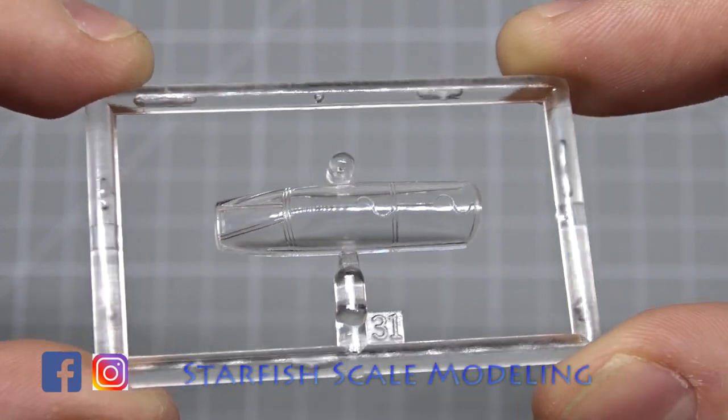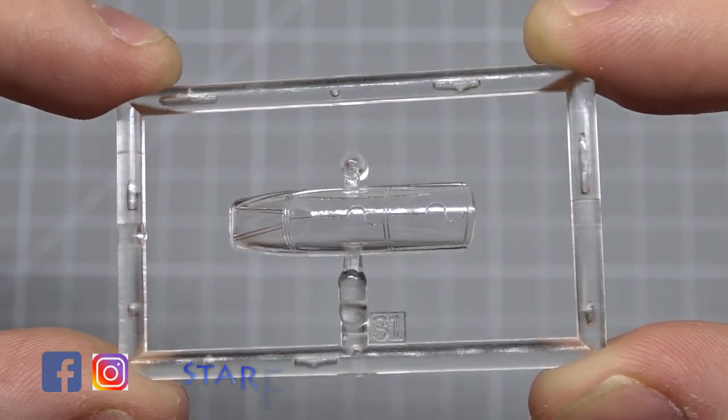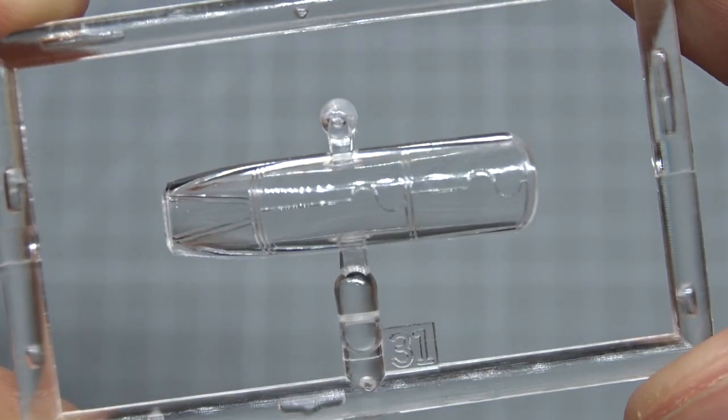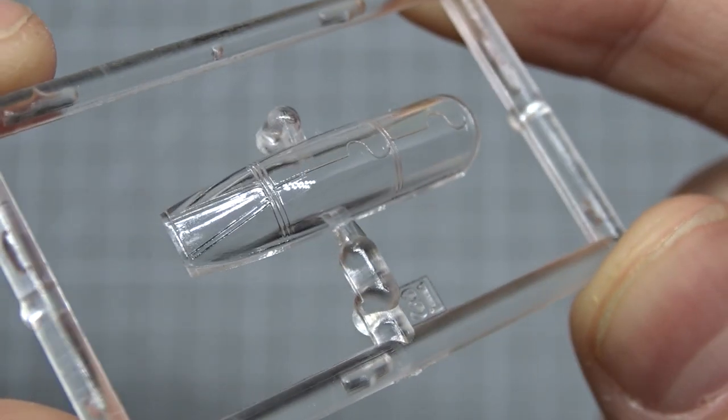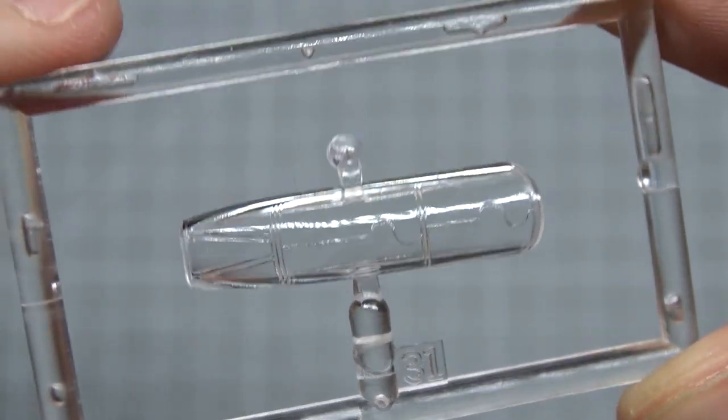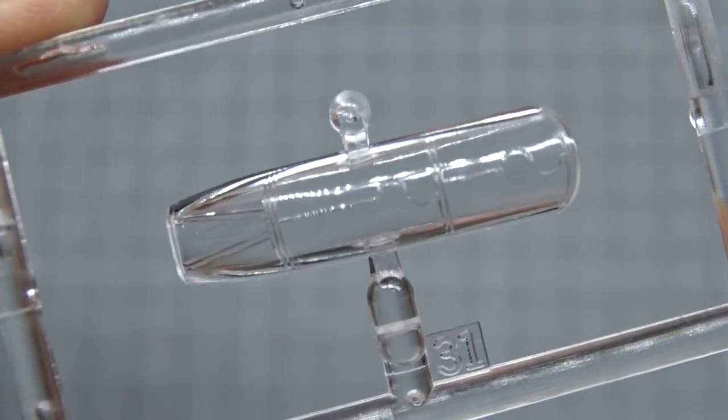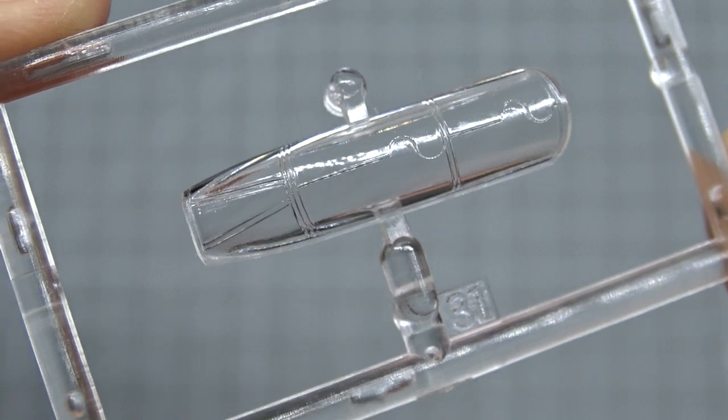Here we have the cockpit glass of the 144th scale tornado I'm working on at the moment. As you can see there is this frame all around that we need to paint, whereas the glass surfaces in between have to stay clear from paint.